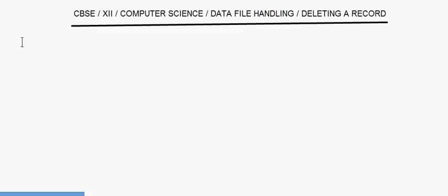Today I'll take up data file handling and we'll be looking at how to delete a record from a file. We have seen how to write to a file, how to read from a file, and how to search for a record in a file. Now after searching a particular record, supposing you want to delete that record, that's what we are going to see today.